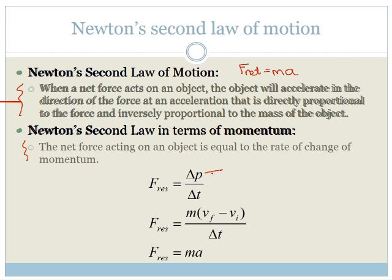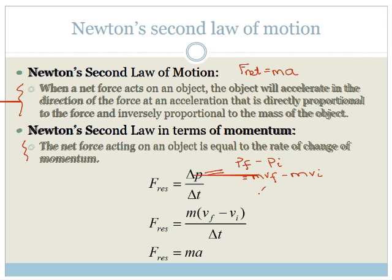Delta P is a change of momentum, which is P final minus P initial. But we know that P final minus P initial can be written as MVF minus MVI, which can be simplified as M times VF minus VI over delta T.